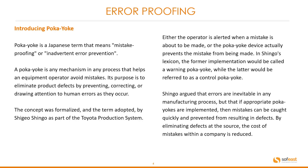Either the operator is alerted when a mistake is about to be made, or the Poka-Yoke device actually prevents the mistake from being made. In Shingo's lexicon, the former would be called a warning Poka-Yoke, while the latter would be referred to as a control Poka-Yoke. Shingo argued that errors are inevitable in any manufacturing process, but if appropriate Poka-Yokes are implemented, mistakes can be caught quickly and prevented from resulting in defects. By eliminating defects at the source, the cost of mistakes within a company is reduced.